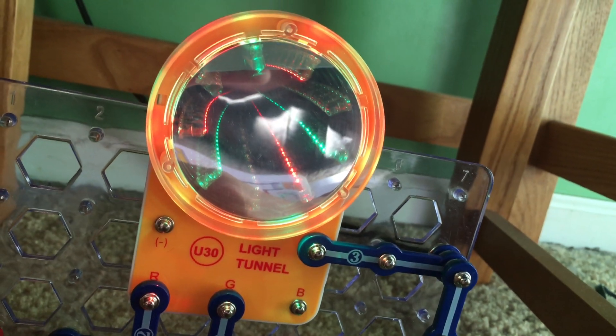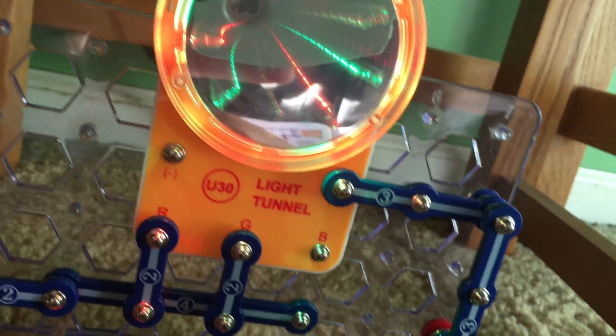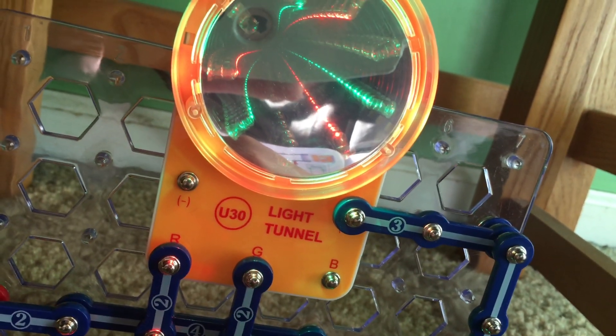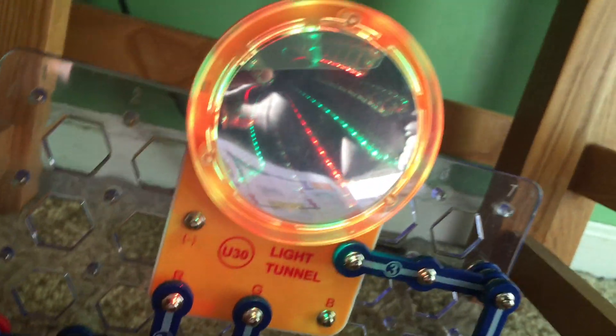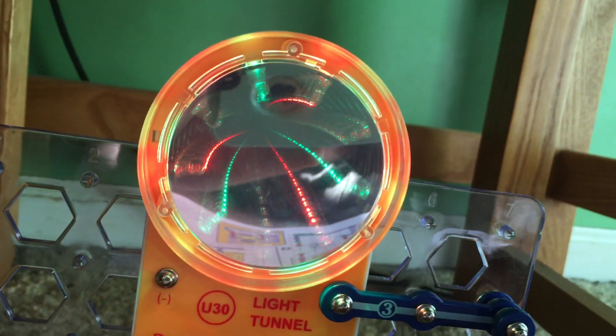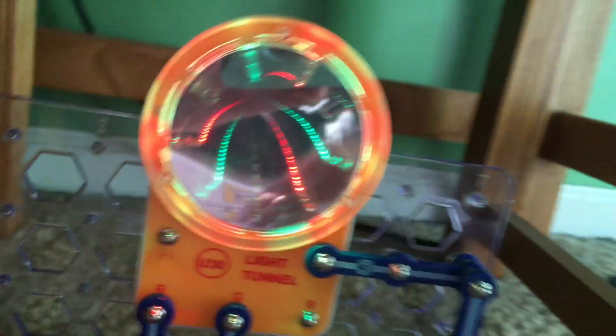Now, only the red and green LEDs are on. I decided to remove the two-snap wire connecting to the blue connector of the light tunnel because it is almost Christmas time and red and green are Christmas colors.